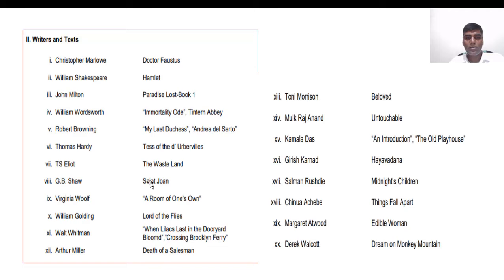Virginia Woolf's famous essay A Room of One's Own talks about the financial freedom of women to write and become poets or writers. She strongly argues that a woman needs a private room of her own and 500 pounds per annum to become a writer. William Golding's novel Lord of the Flies is also a very important novel.